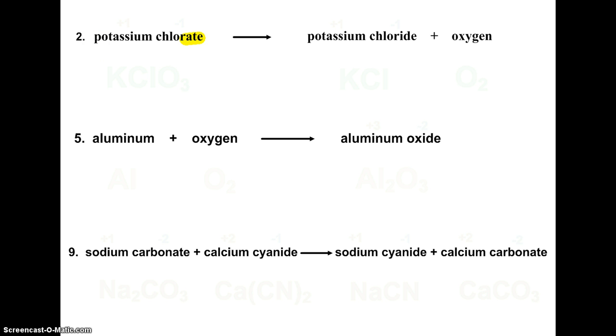Potassium in group one is a plus one ion. Chlorate, I'm sure you have memorized, but if not, on your polyatomic ion list is ClO3 minus one. When we have a plus one, minus one situation, we just put one of each ion together. That is the formula for potassium chlorate.